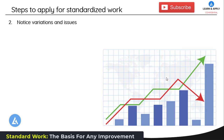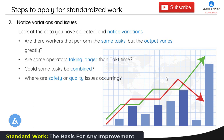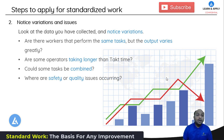In the second step, notice variations and issues. Look at the data you have collected. To identify variations and issues, ask questions like: Are there workers performing the same task with greatly varying output? Are some operators taking longer than the takt time? Could some tasks be combined? Where are safety or quality issues occurring? These questions help you understand the variations and issues in your processes.